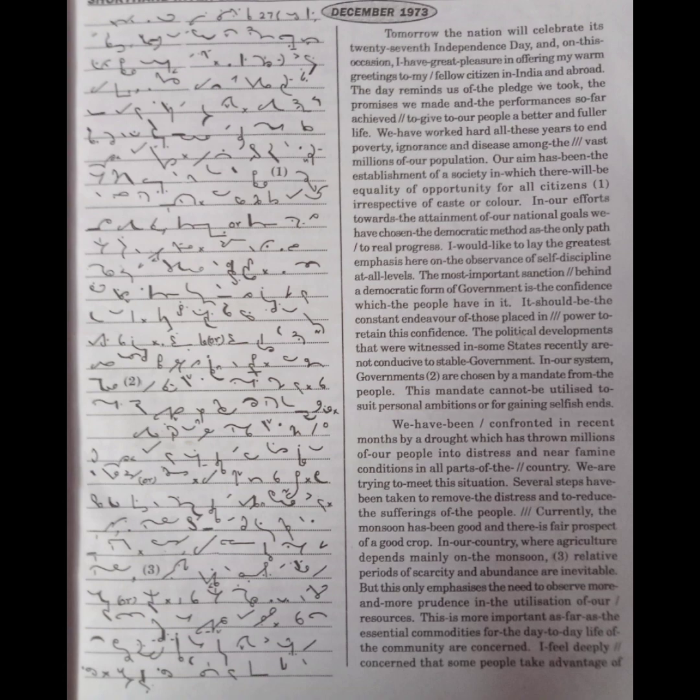We have been confronted in recent months by a drought which has thrown millions of our people into distress and near famine conditions in all parts of the country. We are trying to meet this situation. Several steps have been taken to remove the distress and to reduce the sufferings of the people. Currently, the monsoon has been good and there is fair prospect of a good crop.